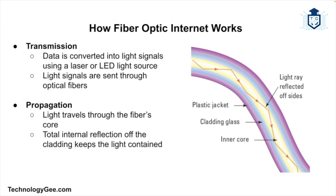Fiber optic internet relies on the transmission of data as light pulses through optical fibers. Here's a simplified explanation of how it works. The first part is transmission — data is converted into light signals using a laser or LED light source, and these light signals are then transmitted through the optical fibers. Then there's propagation — light travels through the core of the fiber optic cable by reflecting off the cladding, which is a protective layer that keeps the light signals contained within the core.